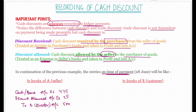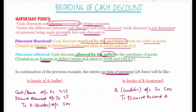The entries recorded in the books of B — the customer — will be: Creditors Account (A) debit $500; to Discount Received Account $25; and to Cash or Bank Account $475, because money is going out of the business.